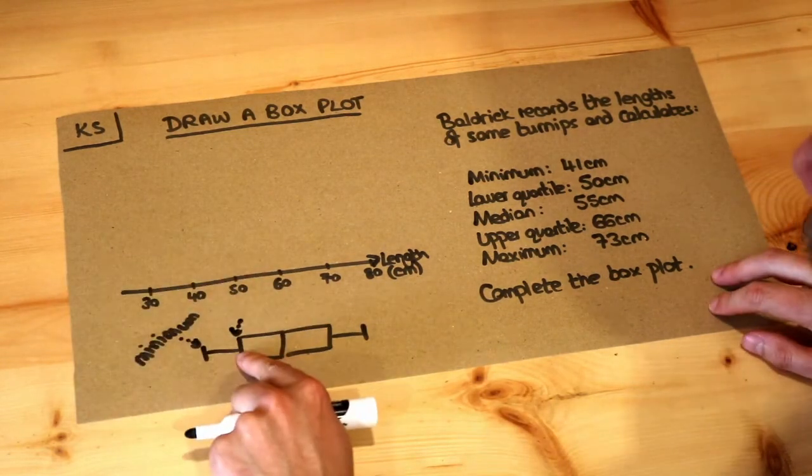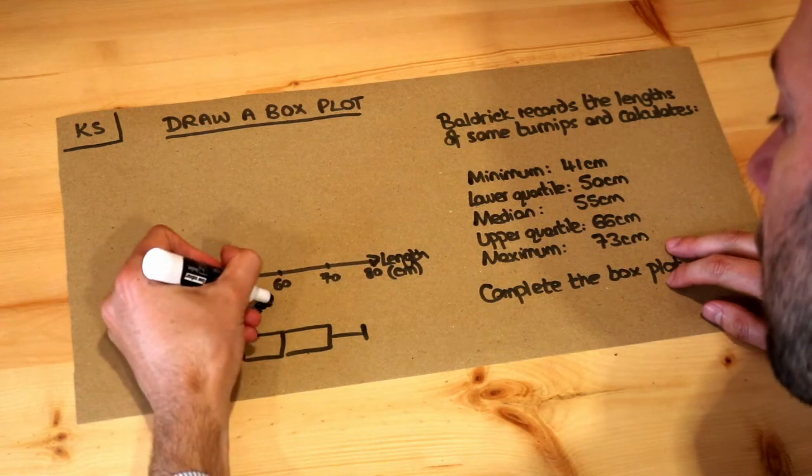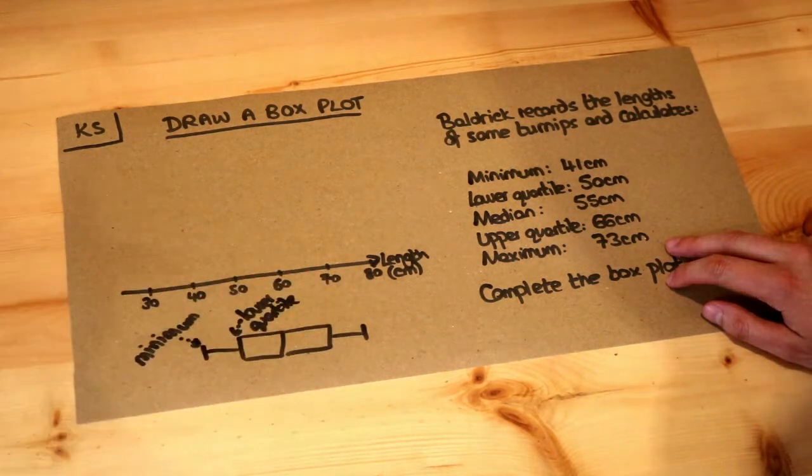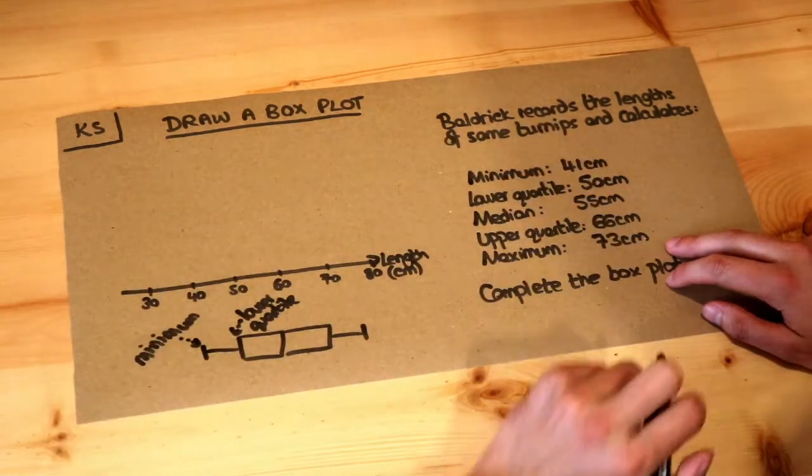Then the left of your box is the lower quartile. So remember the lower quartile is the value which is a quarter of the way along your data if you were to order all the turnips in ascending order of height.